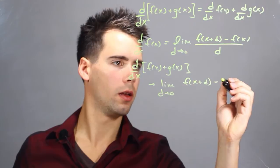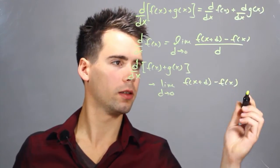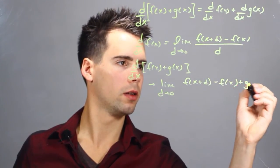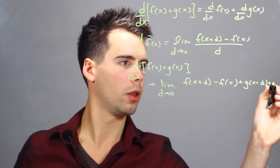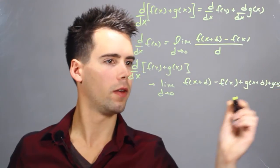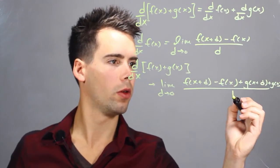d minus f of x plus g of x plus d minus g of x and this is all over d.